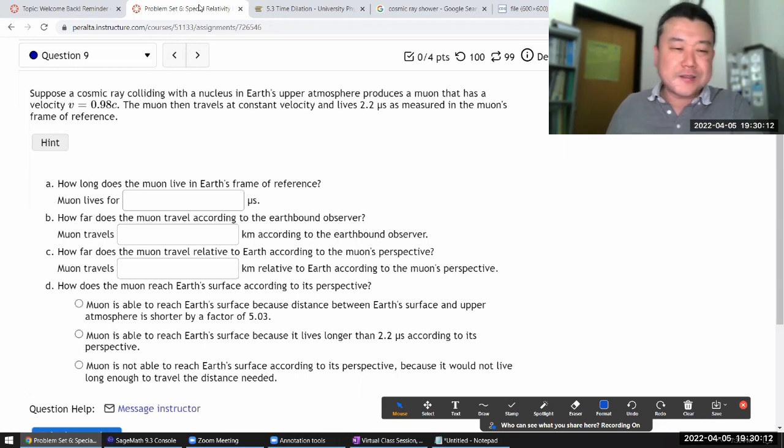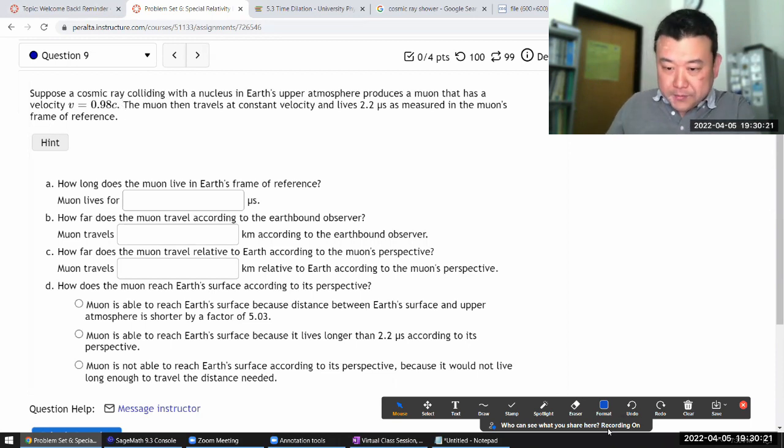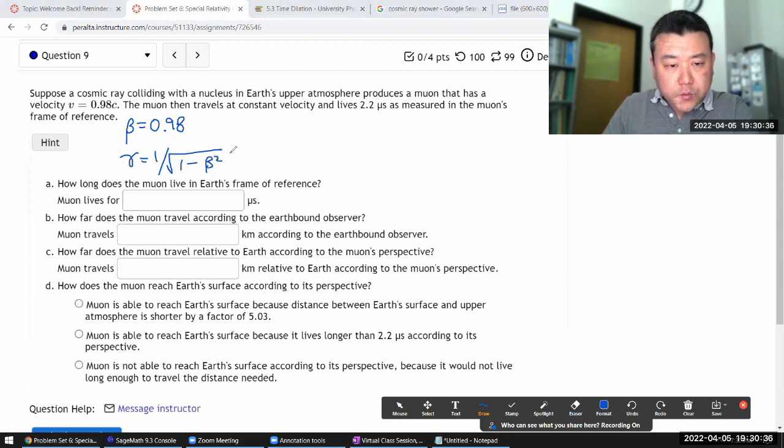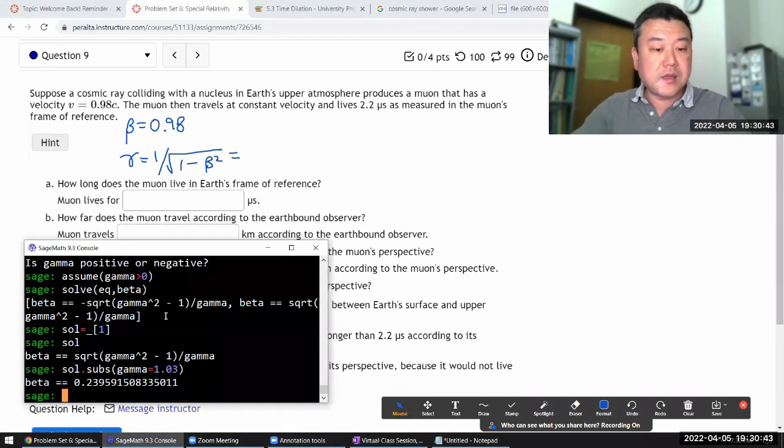But we'll get to particle physics towards the end of the semester, and there's a lot of fun stuff we can talk about. So cosmic ray produces a muon that has this velocity. Or in the parameter that I've been using, we would say beta of that muon is 0.98. And for later, when I need it, gamma will be 1 over square root of 1 minus beta squared. And I have a feeling I'll probably need a number a few times,